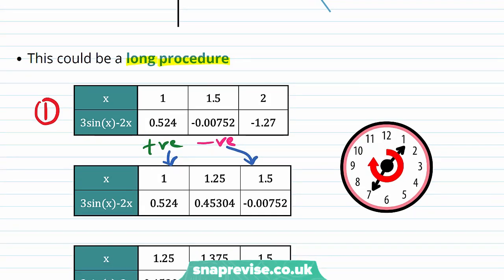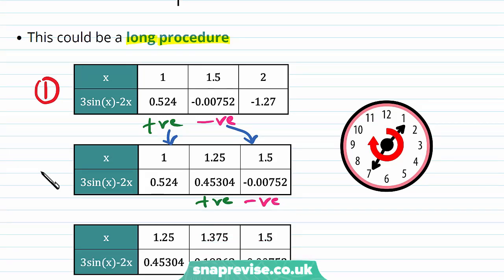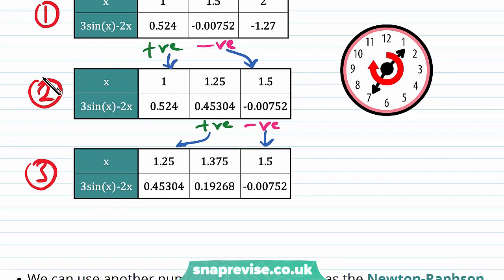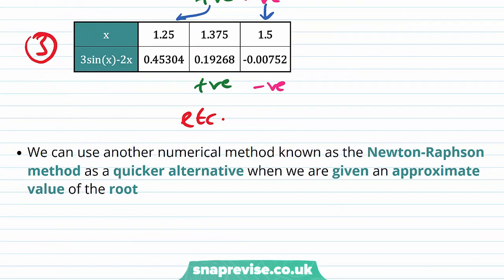And then we have a positive and negative change of sign here. This is our second iteration, so we get our new endpoints for our third iteration being here and here. And then we have our positive here again and our negative here again, and so on. We can use another numerical method known as the Newton-Raphson method as a quicker alternative, when we're given an approximate value of the root.